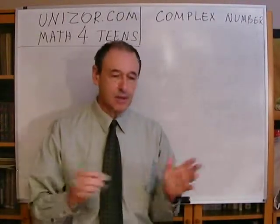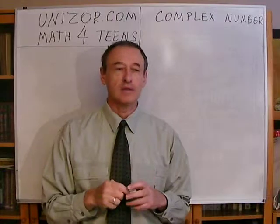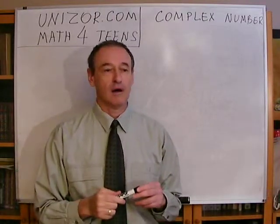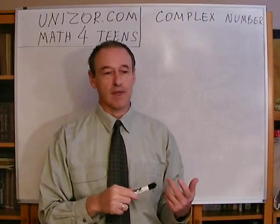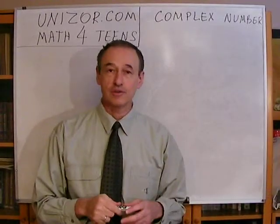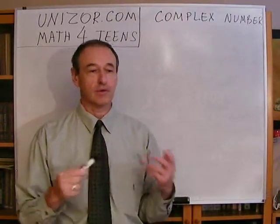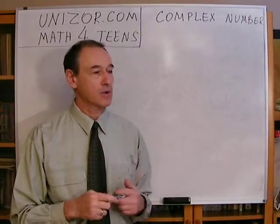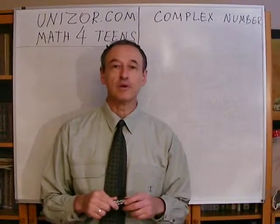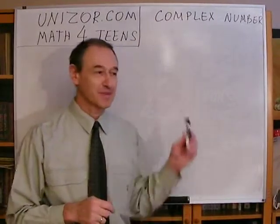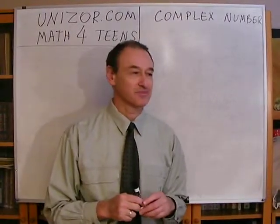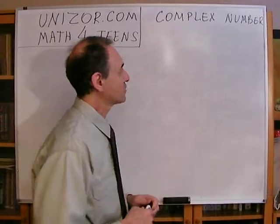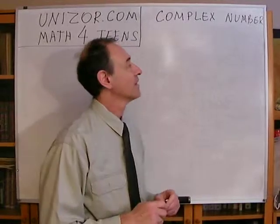This is a continuation of our saga about numbers. We started from natural numbers, added negative ones, then added fractions to get rational, then real numbers came into the story, and right now we are still expanding our universe of numbers. But this is the last expansion — this is the frontier beyond which we do not really go.